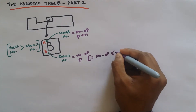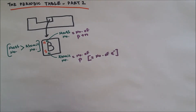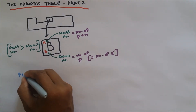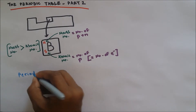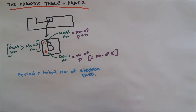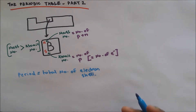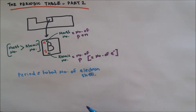Atomic number is the number of protons, and it can also be the number of electrons. Now, what does the period reveal in the periodic table? It reveals the total number of electron shells. If the electron shell count is three, then the element will be found on the third period.